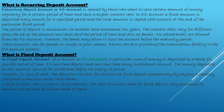Next is the recurring deposit account, also known as RD. It is opened by those who want to save a fixed amount of money regularly for a certain period of time and earn a higher rate of interest than a savings account. A fixed amount is deposited every month for a specific period, and the total amount is repaid with interest at the end of that period. The minimum tenure is 6 months.